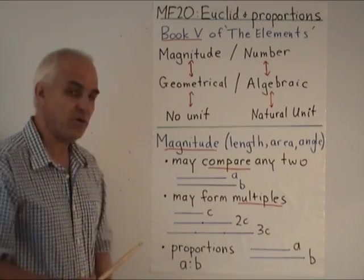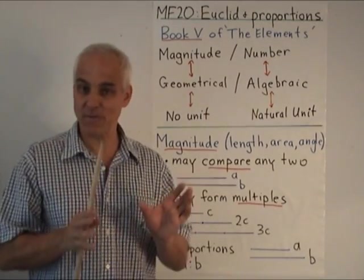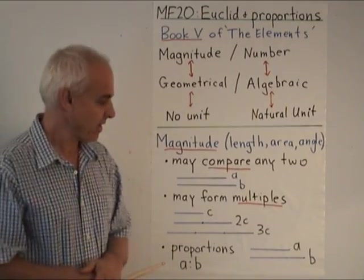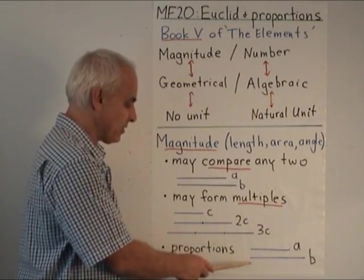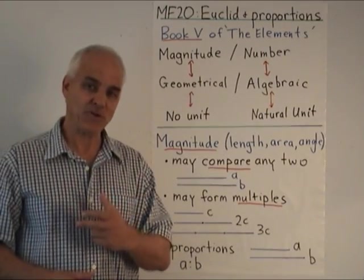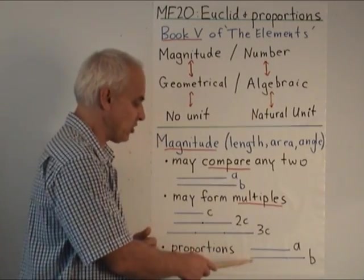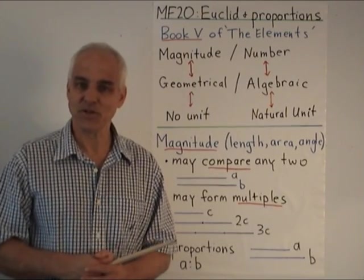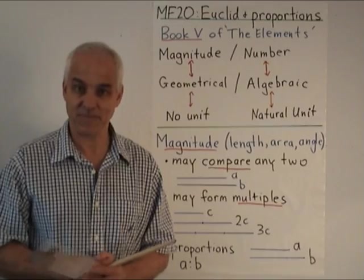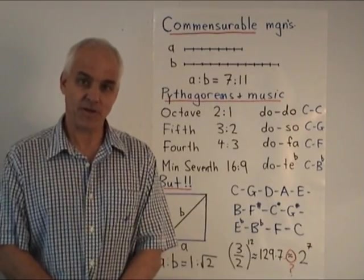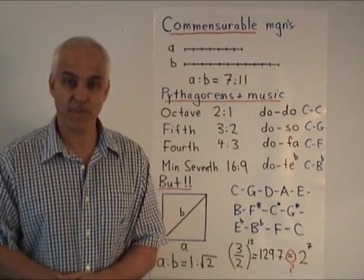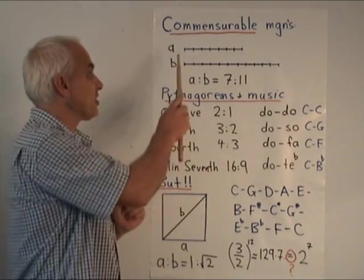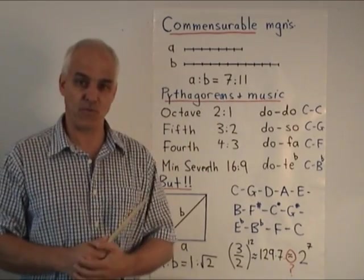The third point is that it's generally the proportions between magnitudes, which is more important than the magnitudes themselves. So given two magnitudes a and b, Euclid was primarily interested in the proportion between these two magnitudes. And this naturally leads to the idea of commensurability. So the ancient Greeks said that two magnitudes were commensurable if we could find a third magnitude such that both of the original two were multiples of that third one.